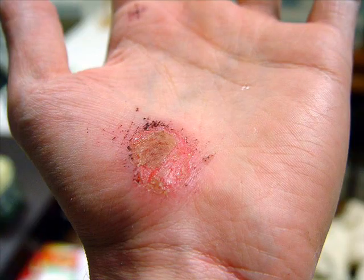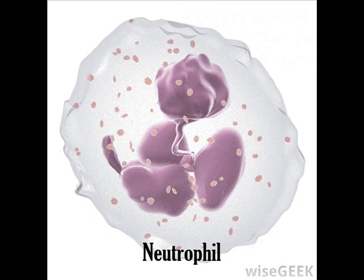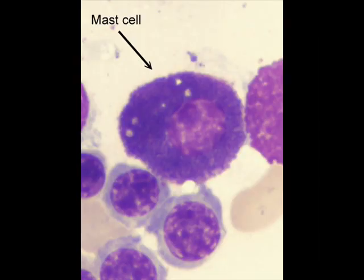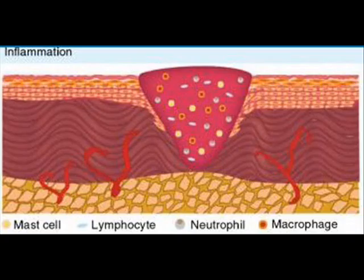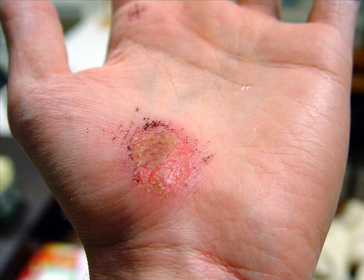This phase can last up to four days. During inflammation, white blood cells, also known as neutrophils and mast cells, come in to clean up the damage. They provide the first line of defense against infection. Swelling, pain and warmth around the wound site are associated with this phase.